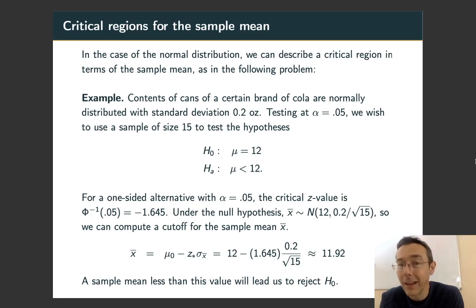So what is an x̄ that is 1.645 standard deviations below the mean? Well, you start with the hypothesized population mean under the null hypothesis, μ₀, and you subtract off z* times σ/√15, and you get 11.92.